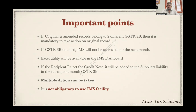An Excel utility is also available in the IMS dashboard for download. If the recipient rejects a credit note, it will be added back to the supplier's liability in the subsequent month's GSTR-3B automatically. Multiple actions can be taken until filing of GSTR-3B. Importantly, IMS facility is not mandatory — it is optional. If we are not ready to use IMS, we can skip the IMS dashboard and avail ITC as per the current scenario.